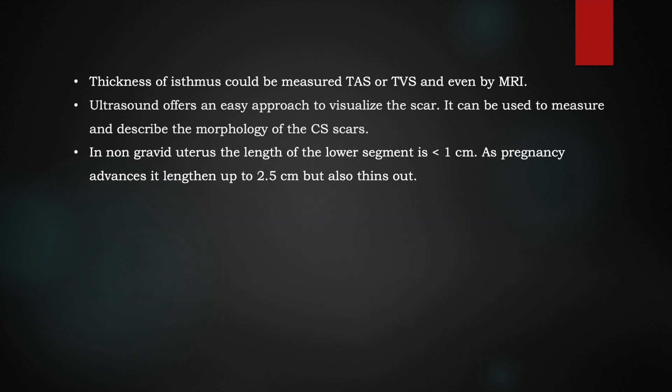The thickness of the isthmus can be measured by ultrasound — by transabdominal or transvaginal ultrasound, or even by MRI. Ultrasound is an easy approach by which we can see the scar, measure it, and also do a morphological assessment. In a non-gravid uterus, the lower segment is around 1 cm maximum, but as the pregnancy progresses, it becomes as long as about 2.5 cm and gradually thins out.